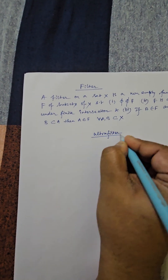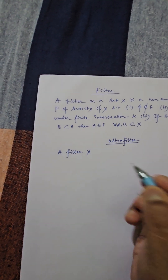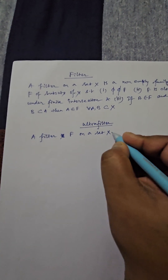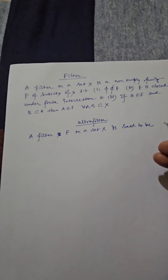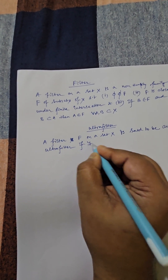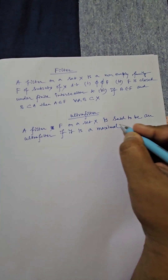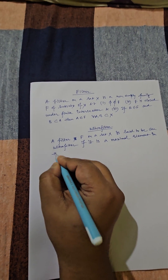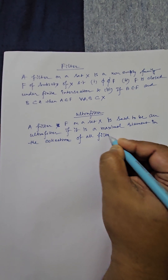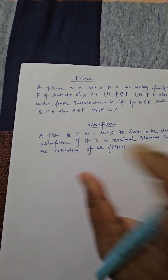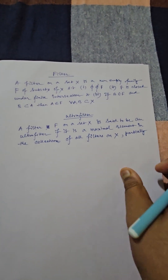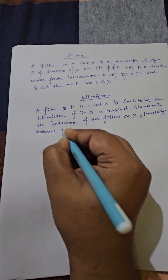A filter F on a set X is said to be an ultrafilter if it is a maximal element in the collection of all filters — that means, out of all possible filters, it is the largest possible filter you are considering. All these are defined over X, and there is another restriction: the collection should be partially ordered by inclusion.